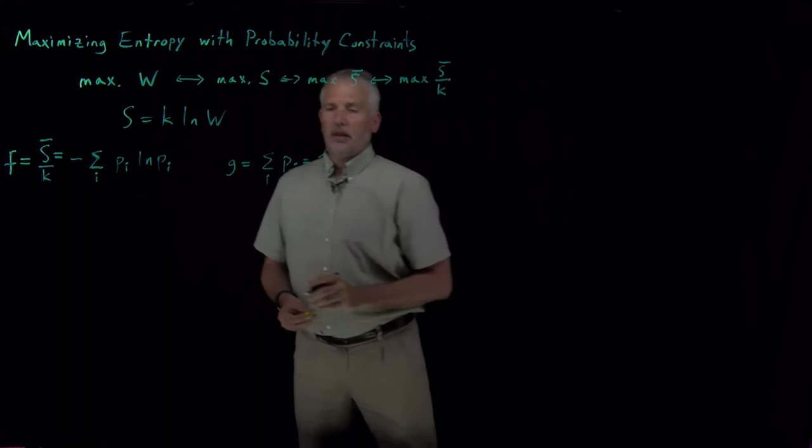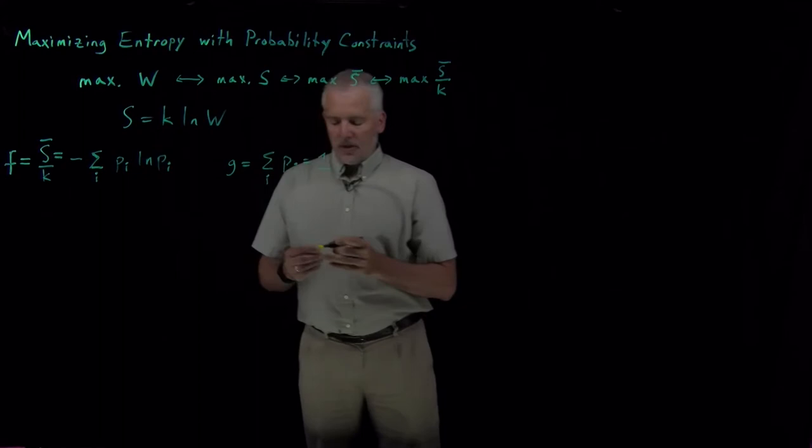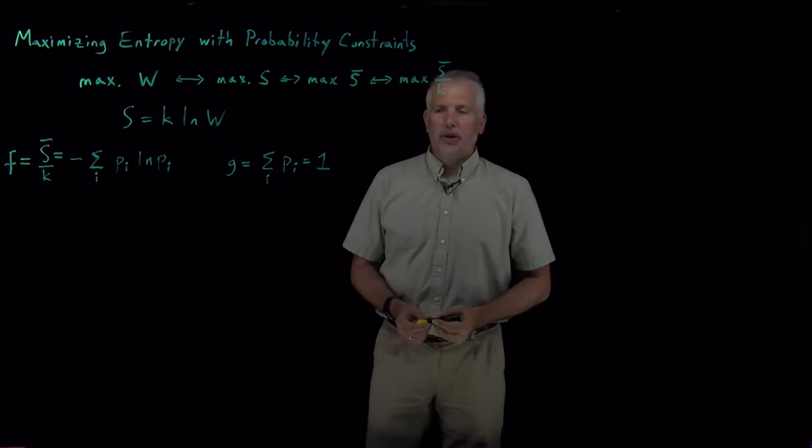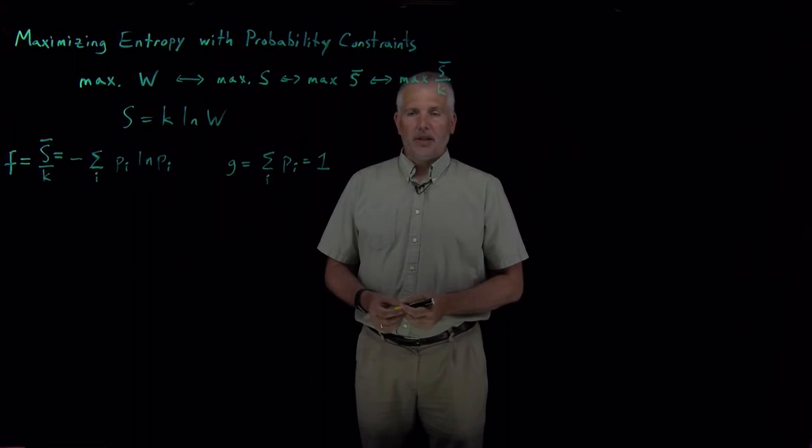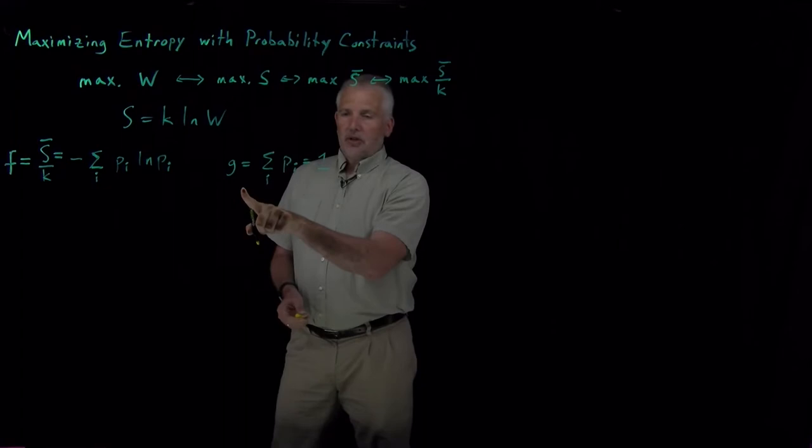We've done this for the specific case of just two outcomes, heads and tails, for example. But we're in a position now where we can do it more generally, where there might be 10 different states the molecule can occupy, or 10 different products that can happen in a reaction. So if we want to maximize this function subject to this constraint, we can use Lagrange multipliers to do that.